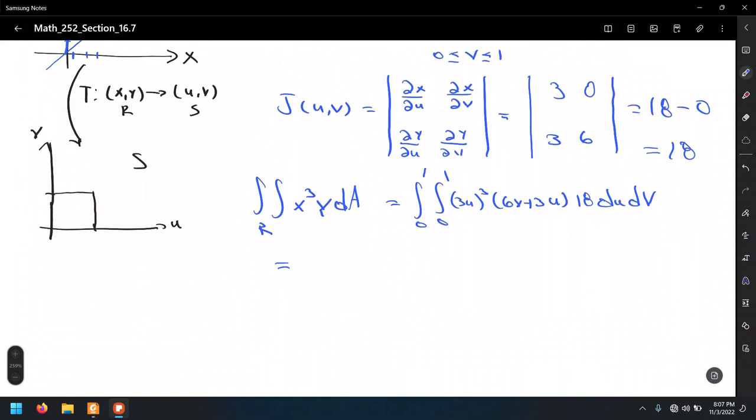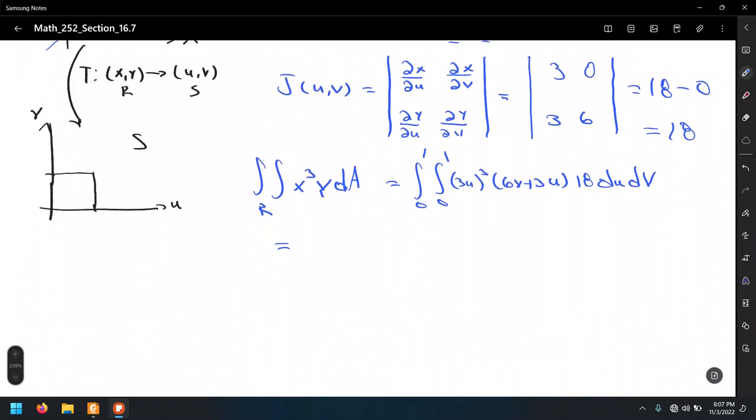That's 3 cubed, which is 27. u cubed from 0 to 1, and from 0 to 1, that's 27 u cubed, 6v plus 3u, times 18 du dv.